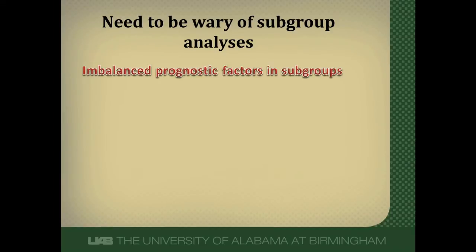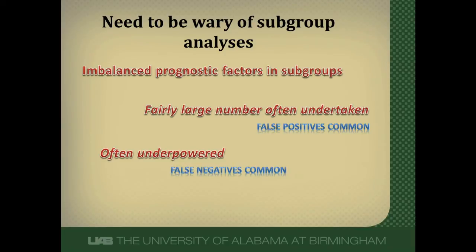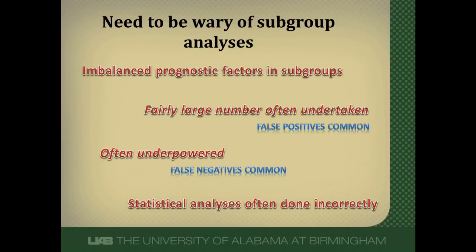When we break up a study into different subgroups, we probably have an imbalance in prognostic factors among those groups. One of the reasons we randomize people is to equalize confounding and prognostic factors. If you pull out diabetics versus non-diabetics, diabetics will be very different prognostically — you've totally negated the benefit of randomization. Often a large number of subgroup analyses are undertaken, making false positive findings much more common. And because you break up your population into smaller and smaller subgroups, they are often underpowered, making false negatives also common. Finally, the statistical analyses are often done incorrectly in subgroup analyses.